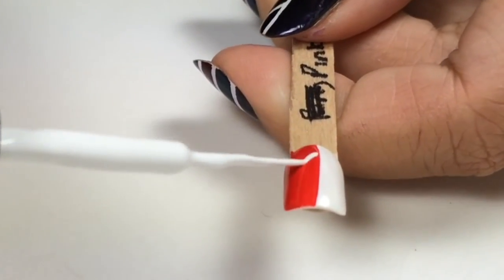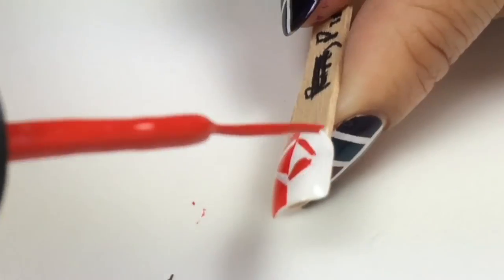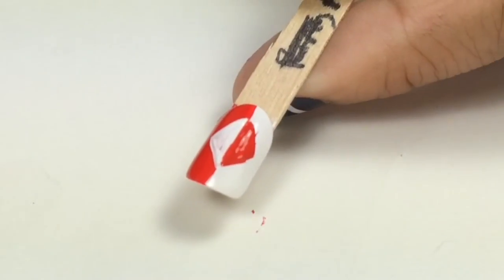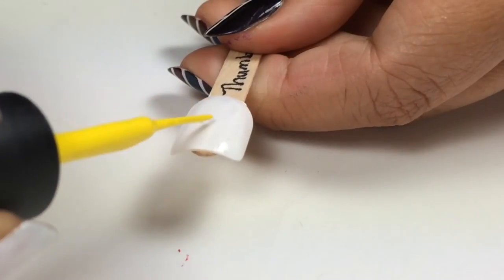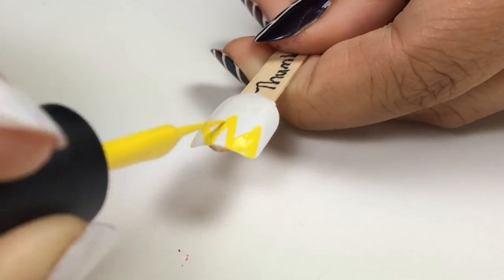And last, I created the diamond shape. Last, on the thumb, I created the crown for the Queen of Hearts.